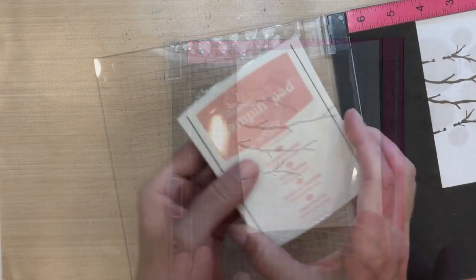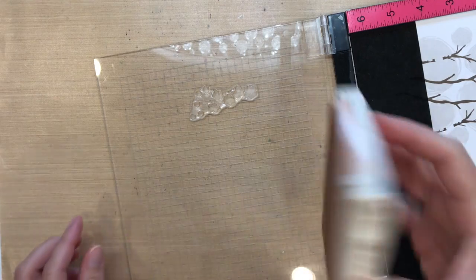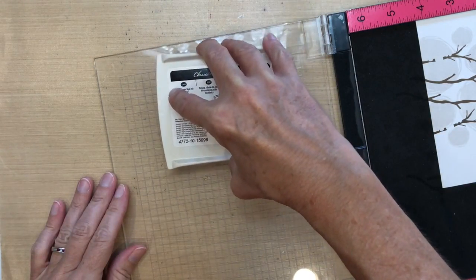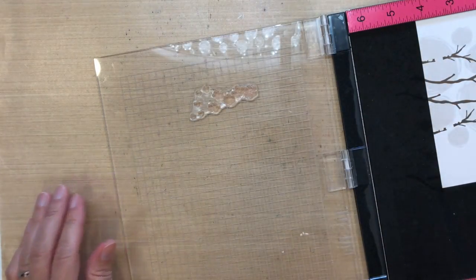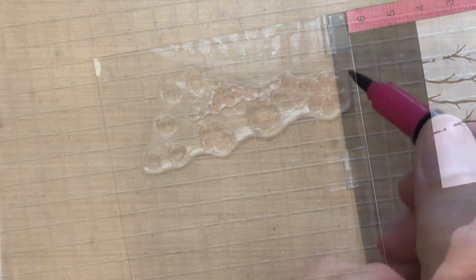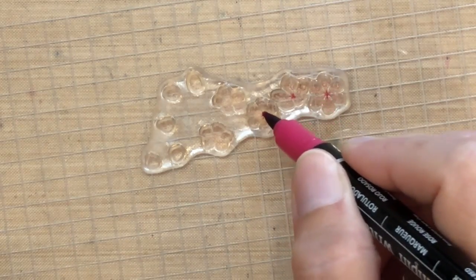I'm using Blushing Bride ink by Stampin' Up. I'm using this color because I thought it would go well with the fog. It's kind of muted and not very bright. I'm going to ink up my flowers, and then I'm going to add this one little step to add some detail to my flowers. I'm going to take a rose red marker, use the thick tip, and just add some dots to the center of each of these flowers.